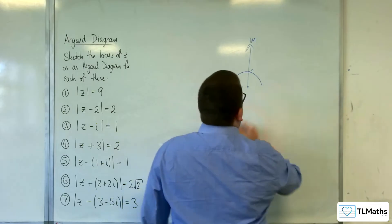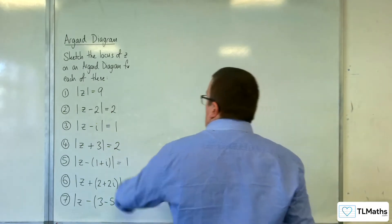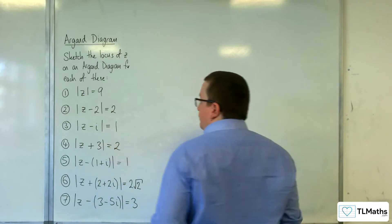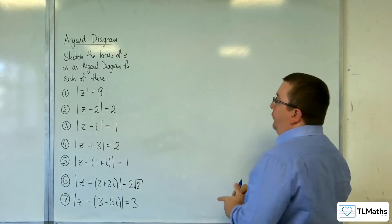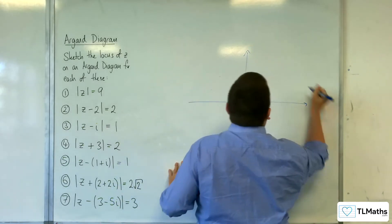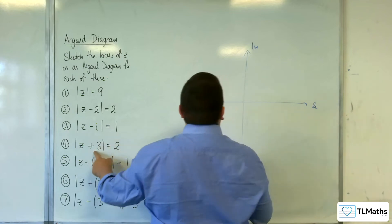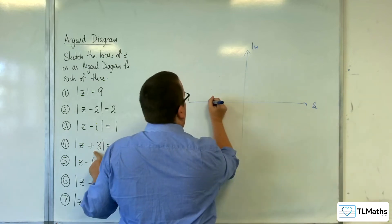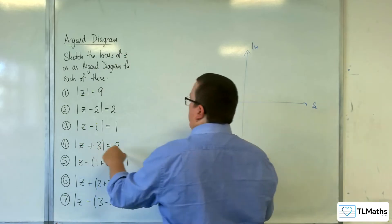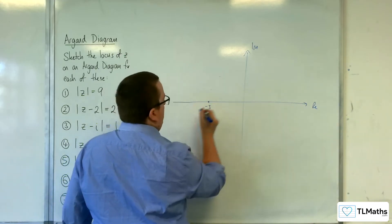Once you get the hang of this, it's really not too bad. Number 4. z plus 3 is equal to 2. So the circle is centred at minus 3 on the real axis. There's your minus 3, and it's got a radius of 2. So this one isn't going to go through the origin.